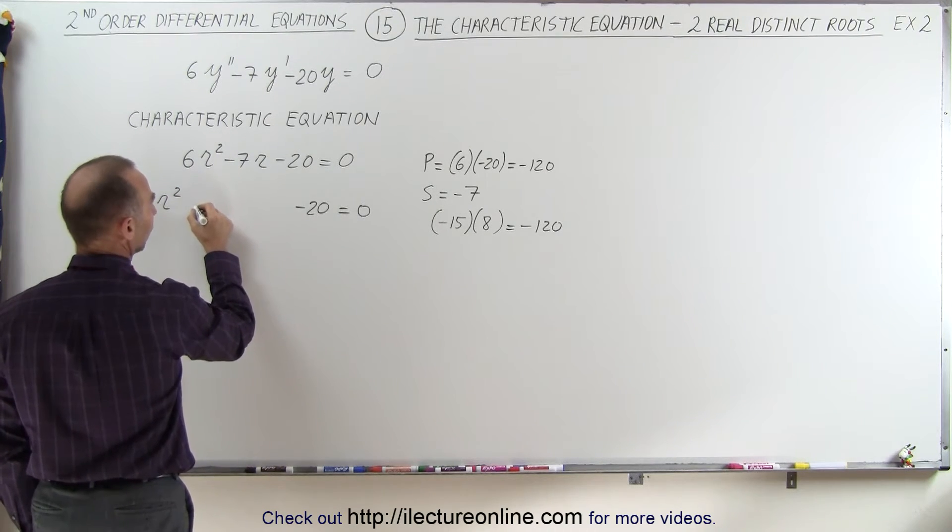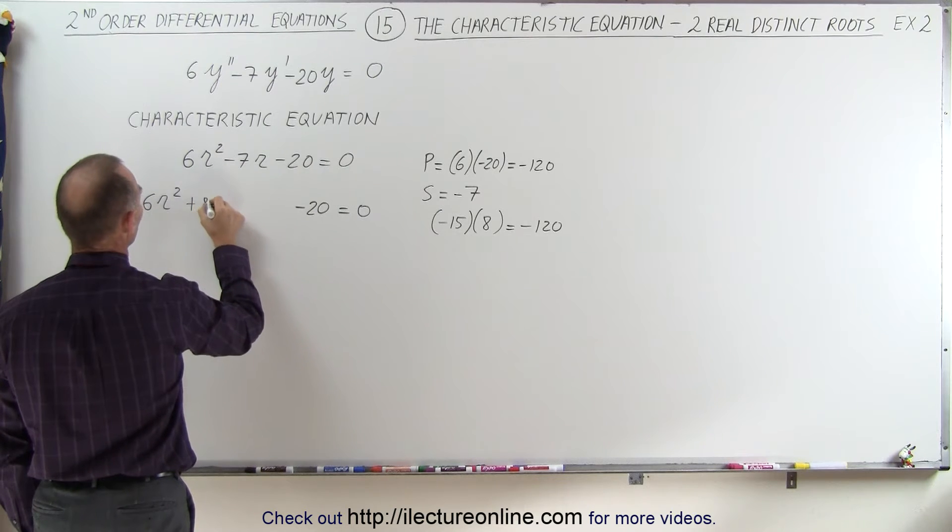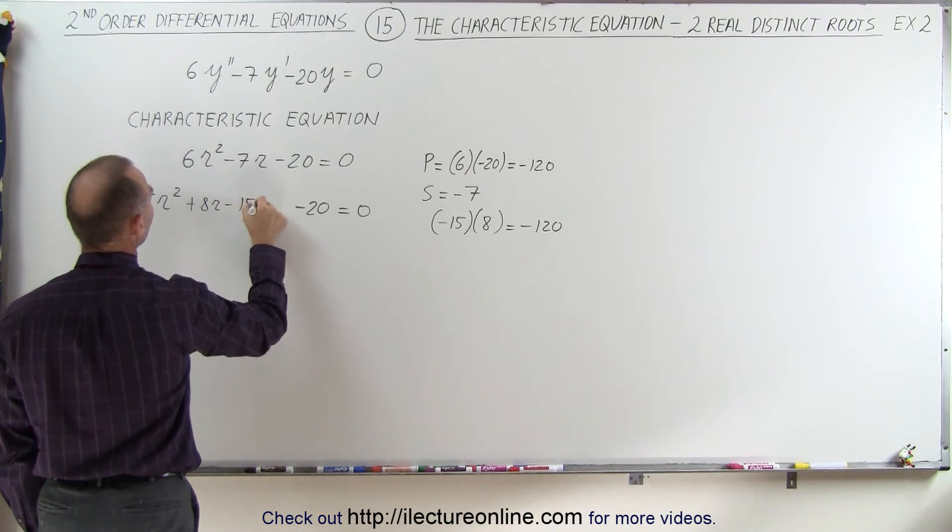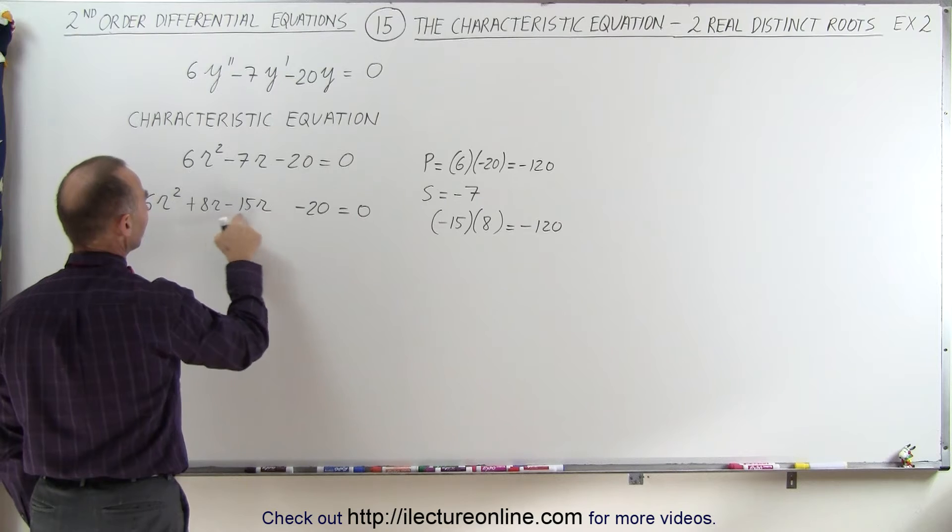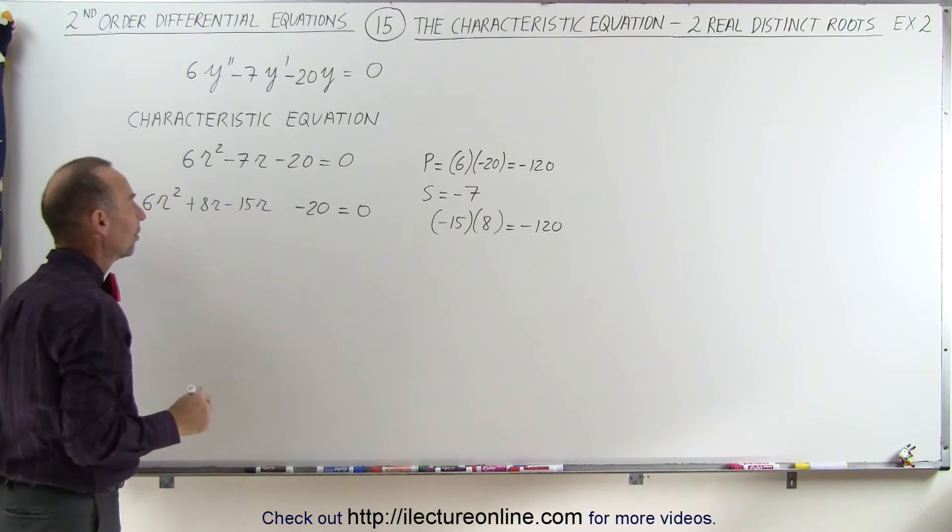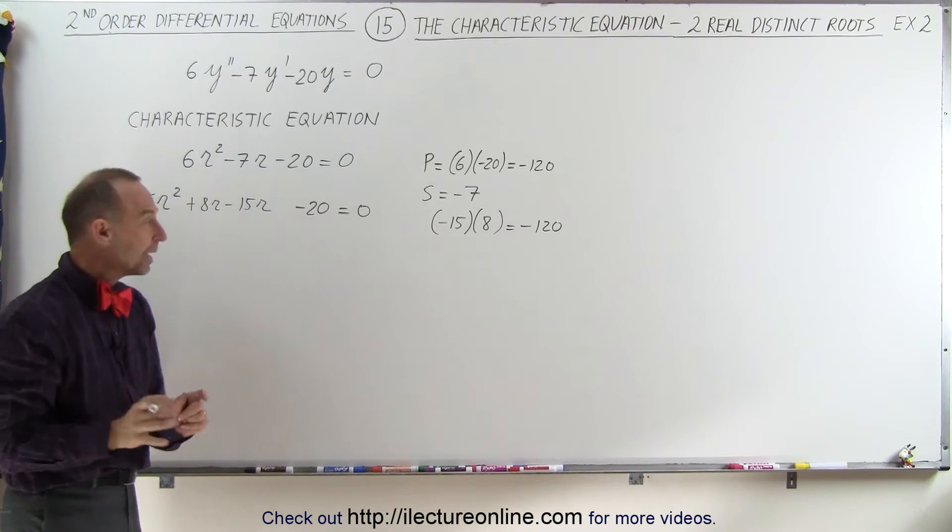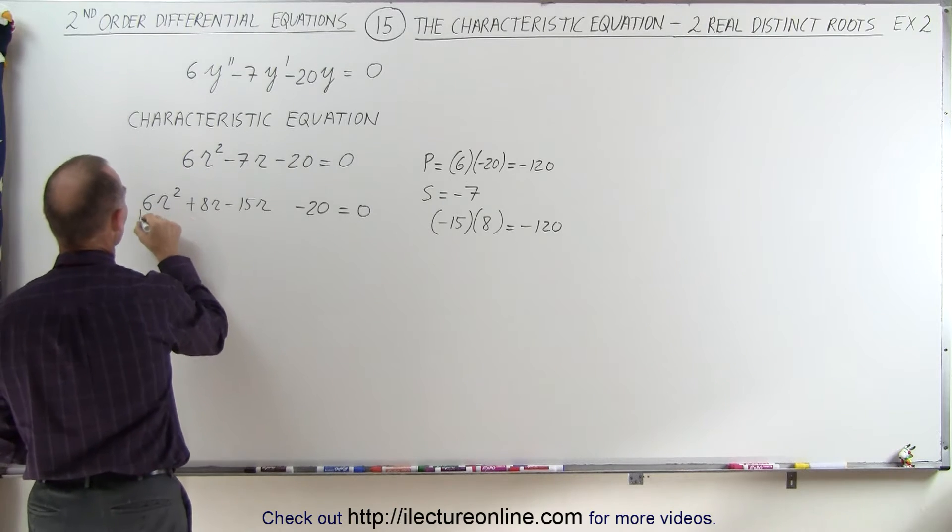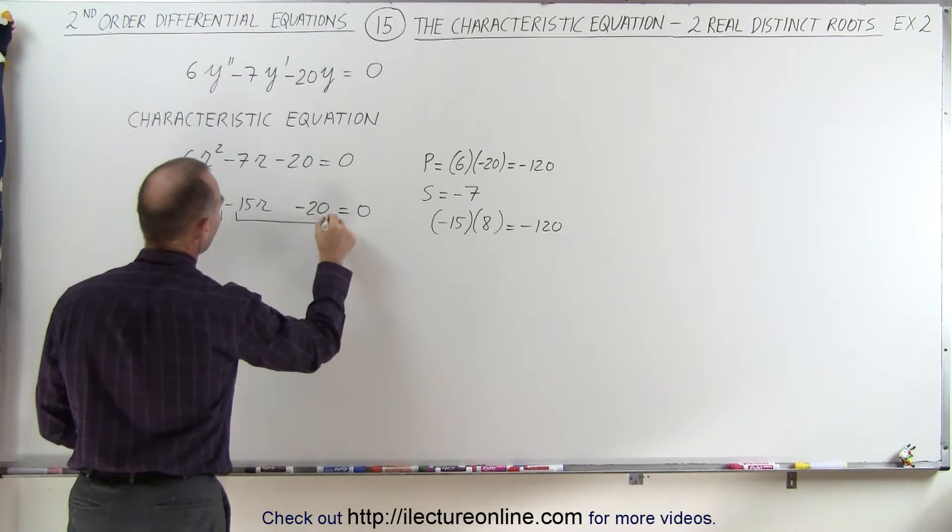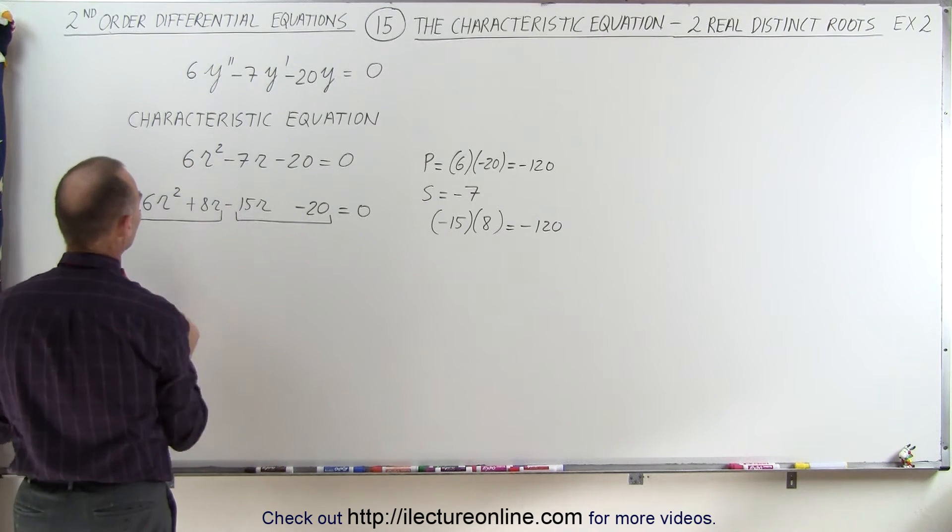So this can be written as +8r - 15r. If I add these two together, I get back to -7r. This makes it easier to find the two roots because I can group them in groups of 2.